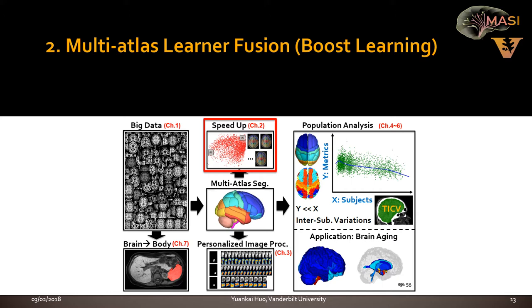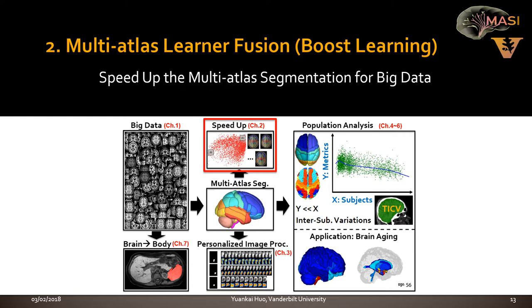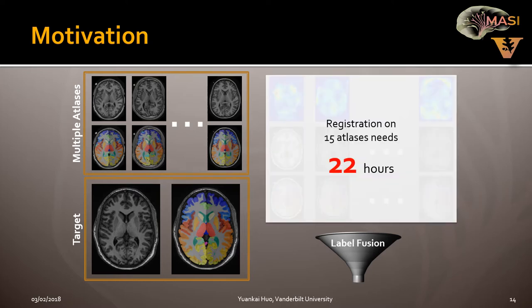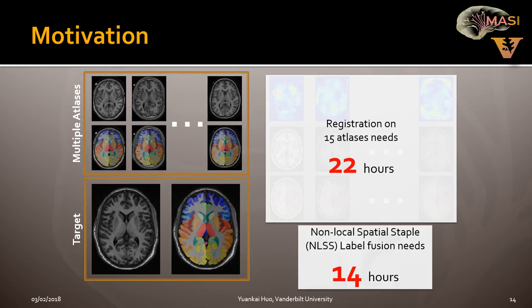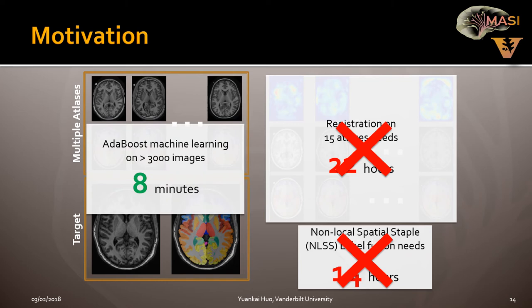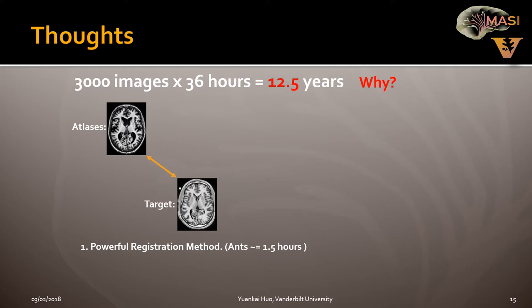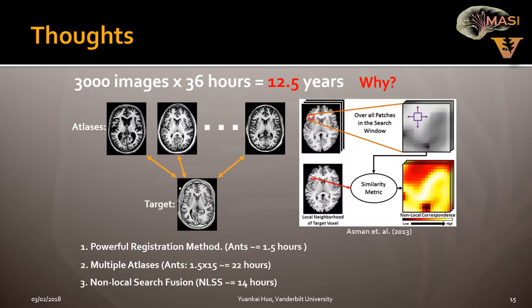Now I introduce a method to speed up multi-atlas label fusion, called multi-atlas learned fusion, which enables processing in minutes. Going back to the multi-atlas segmentation framework: registration takes 22 hours and label fusion takes 14 hours. We want to get rid of this time-consuming process and produce an 8-minute solution. For 3,000 image segmentation at 36 hours each, you would need 12.5 years with one computer.